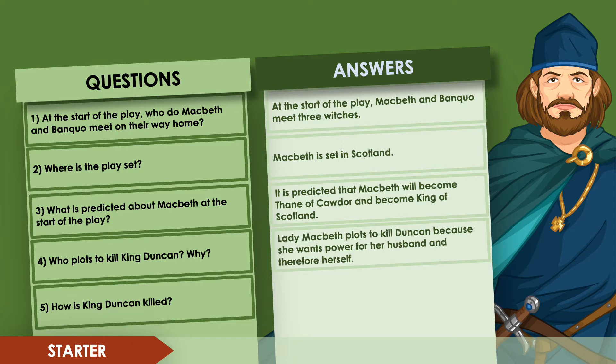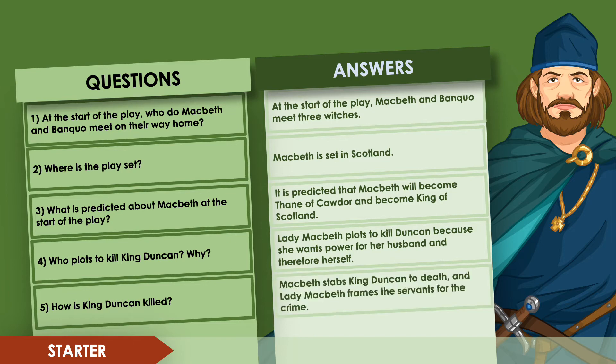Question four: who plots to kill King Duncan and why? It is Lady Macbeth who plots to kill King Duncan because she wants power for her husband and therefore herself. Remember, women at this time had no power and were the property of their husband, so the fact that a woman was plotting to murder would have instantly turned the audience against this character. Shakespeare is telling his audience that Lady Macbeth is a character we are not meant to like. Question five: how is King Duncan killed? Macbeth stabs King Duncan to death and Lady Macbeth frames the servants for the crime.